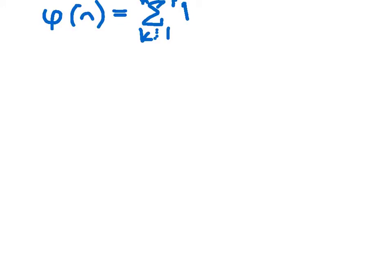The next function we're going to look at is the Euler-Totient function, phi of n. Phi of n is equal to the sum — it's basically the number of positive integers below n which are relatively prime to it. That's what this prime on the summation symbol tells us.